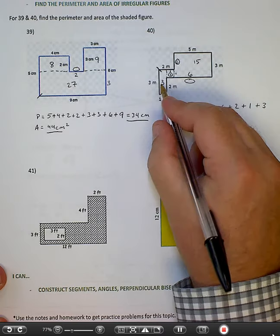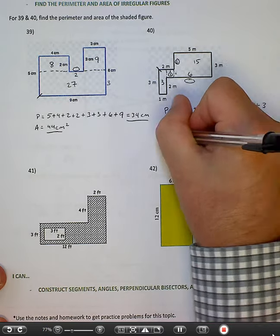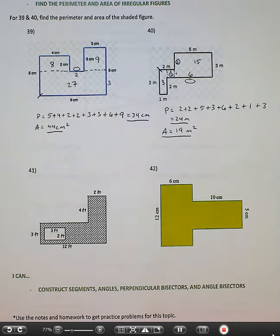So 3 plus 1 is 4, plus 15 is 19 meters squared.